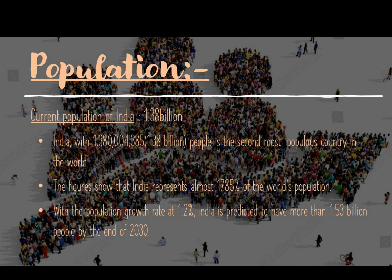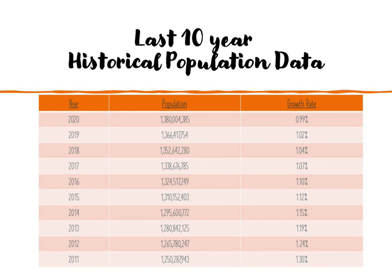Now let's talk about the population of India. The current population of India is 1.38 billion. India, with 1.38 billion people, is the second most populous country in the world. The figure shows that India represents almost 17.85% of the world's population. With a population growth rate of 1.2%, India is predicted to have more than 1.53 billion people by the end of 2030.